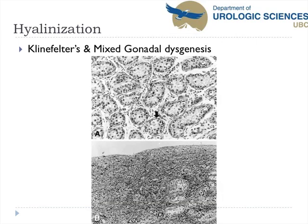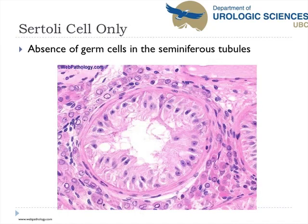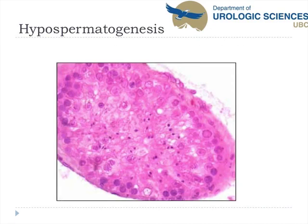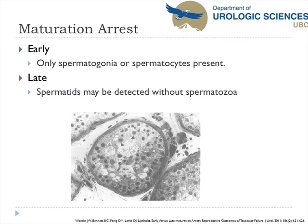In hyalinization, it often occurs in Klinefelter's and mixed gonadal dysgenesis — there's hyalinization and inflammatory cells around the seminiferous tubules. With Sertoli cell only, there are no germ cells present. Hypospermatogenesis is the next progression — there are some germ cells but very few and a very low rate of spermatogenesis. Maturation arrest can be subdivided into early and late: in early arrest, you only see up to spermatocytes; in late maturation arrest, you see some spermatids but no spermatozoa.